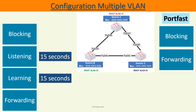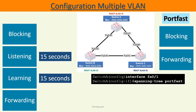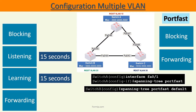Interfaces with Portfast mode activated will immediately switch to forwarding mode, skipping the listening and learning states. It is important to activate this mode on all interfaces that will be connected to hosts. The 'spanning-tree portfast' command enables this mode. It is also possible to activate this function by default on all ports of the switch using the 'spanning-tree portfast default' command in global configuration mode.